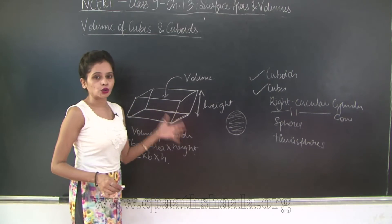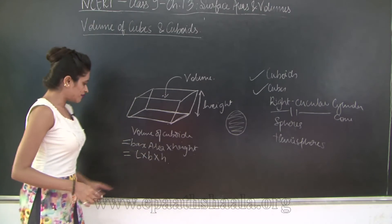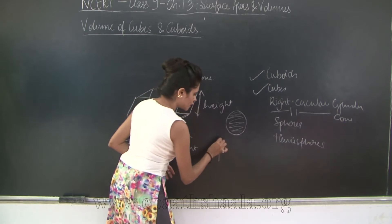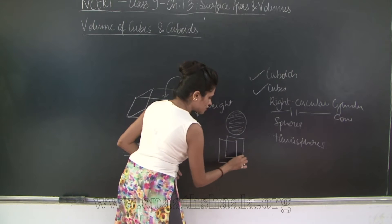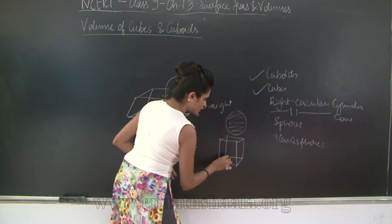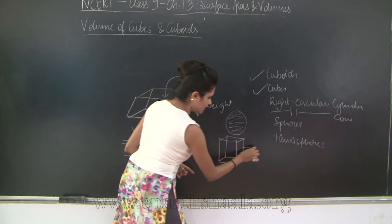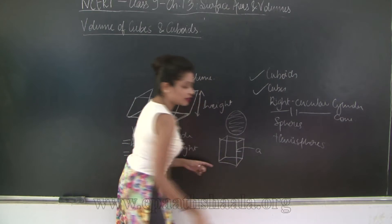Now here we have a cuboid. What about a cube? So if I draw a cube, a cube we know that all the edges are equal in length. So all these edges let's say have length of side A.